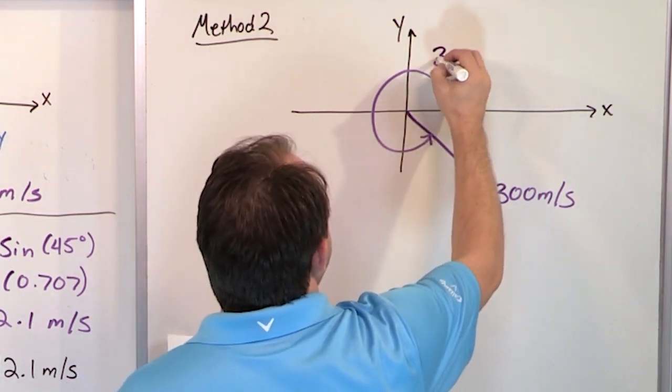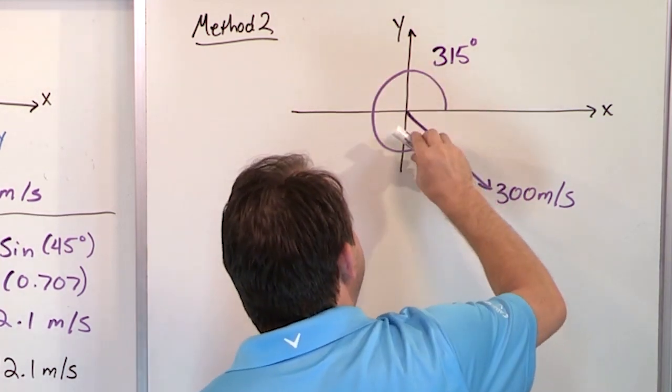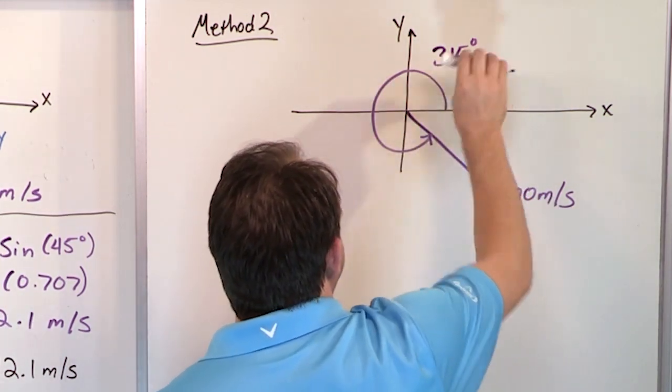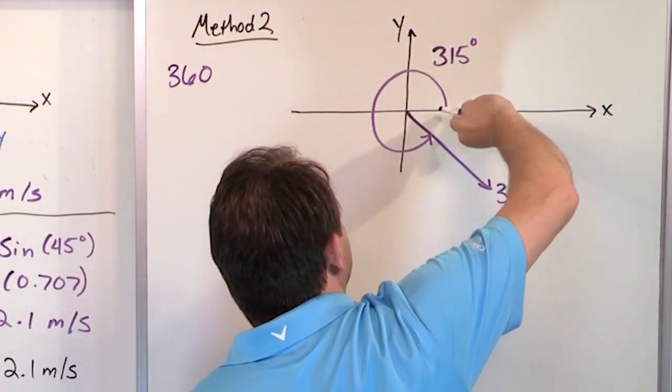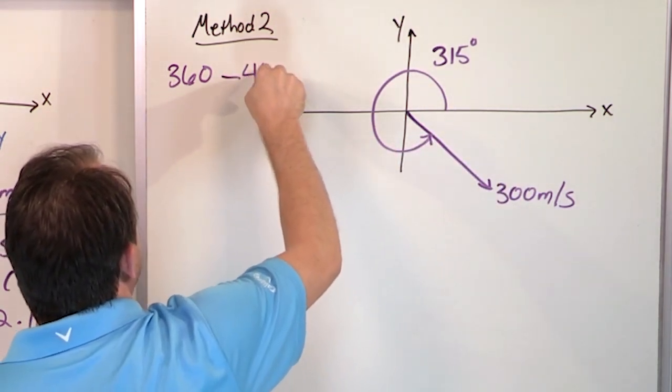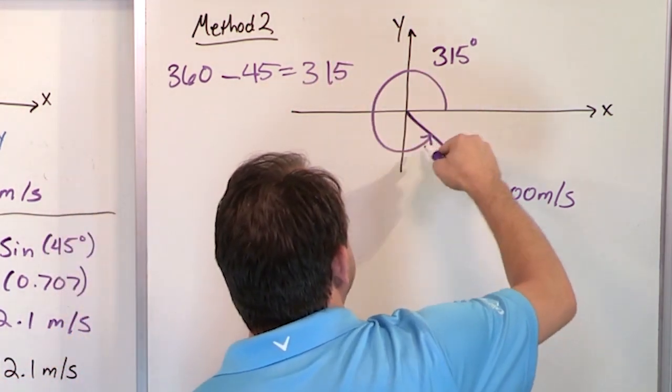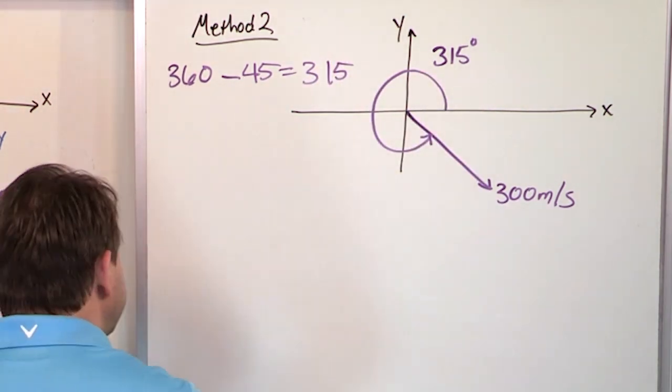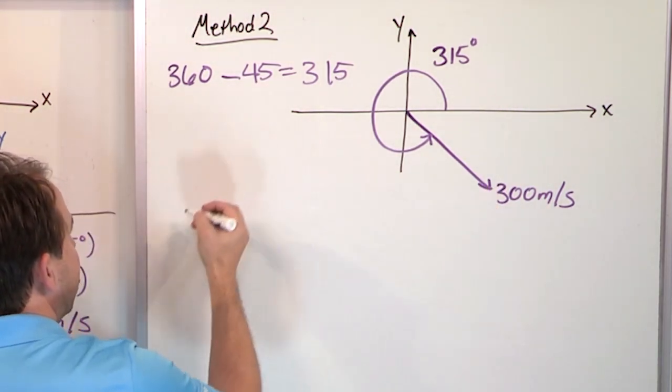315 degrees all the way here because back to the origin again, or the x-axis is 360, right? So if you take 360, which is a whole circle, and then subtract out the 45 here, what do you get? 315. So that's how we know that this angle is 315 degrees. So we can do the exact same calculation using 315 degrees.